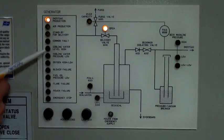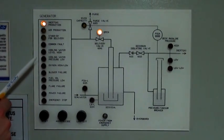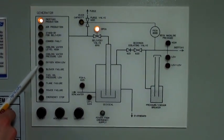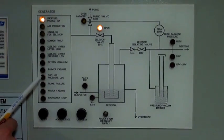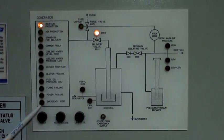The red indications are for alarms like common fault, cooling water level high, cooling water pressure low, oxygen high/low, blower failure, fuel oil pressure low, flame failure, power failure, and emergency stops.